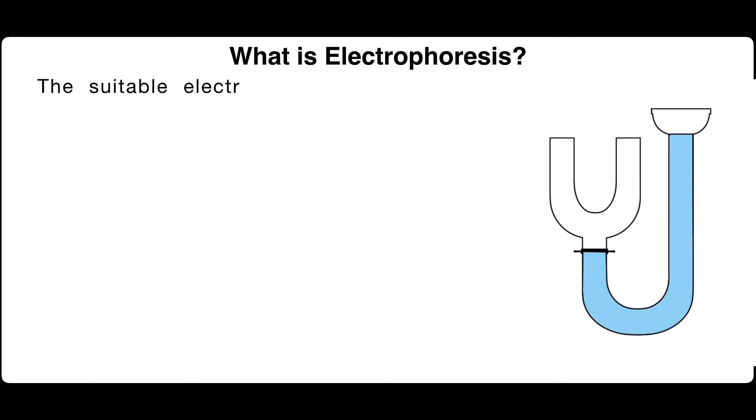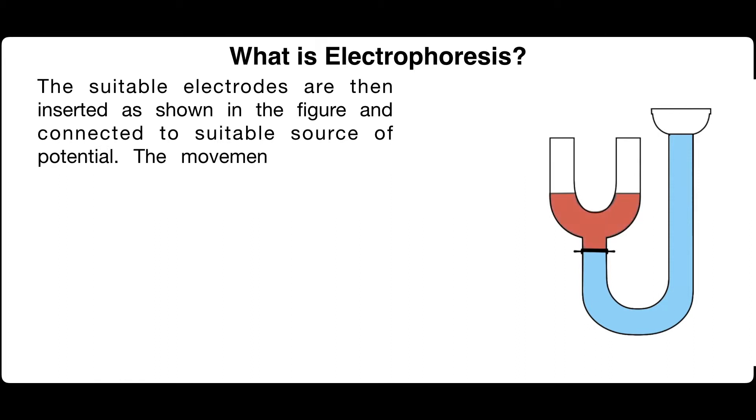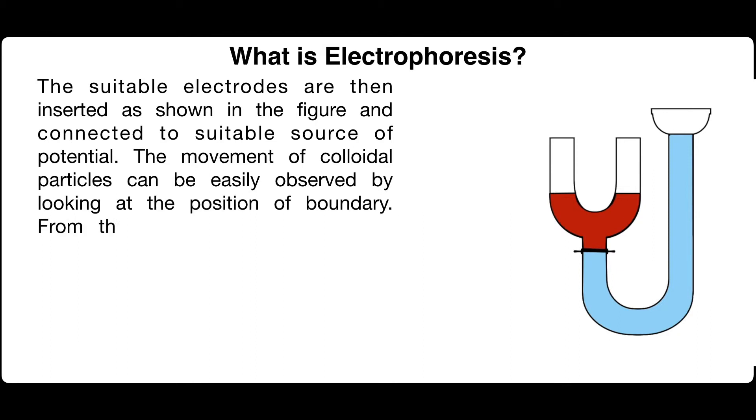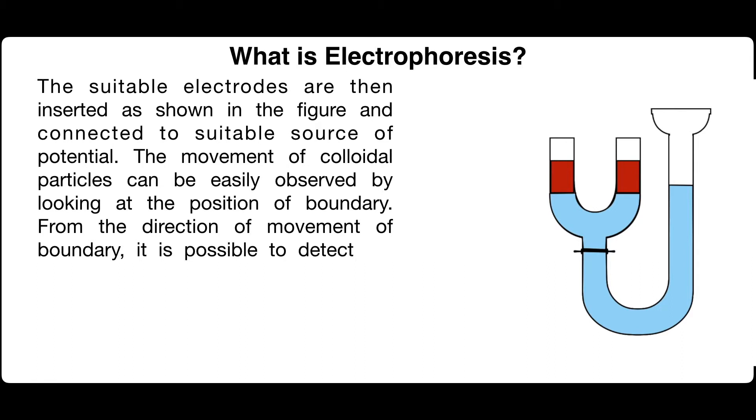The suitable electrodes are then inserted as shown in the figure and connected to suitable source of potential. The movement of colloidal particles can be easily observed by looking at the position of boundary. From the direction of movement of boundary, it is possible to detect the rate at which the colloidal particles migrate in an electric field.